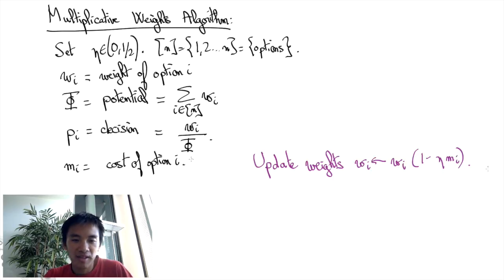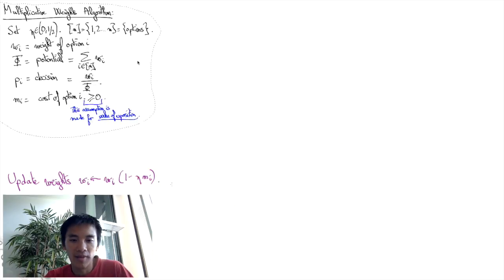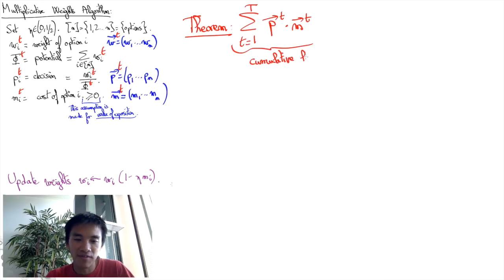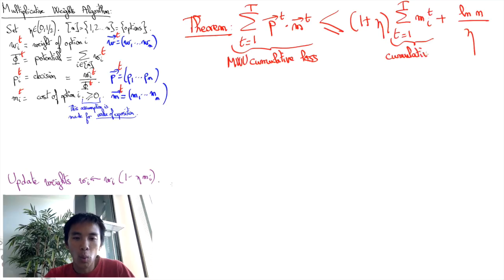For simplicity, I restrict myself to non-negative costs in this video, as this is sufficient to highlight the key results and the key proof techniques. The major theorem regarding the Multiplicative Weights Update algorithm asserts that expected cumulative losses after T rounds can be nicely upper bounded by an option's cumulative losses plus a term that is proportional to the logarithm of the number of options.